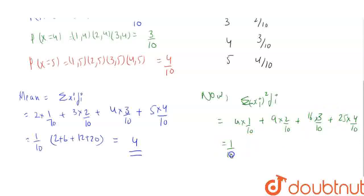So, let's take 1 by 10 common, which leaves us with 4 plus 10 plus 48 plus 100. That is 17.